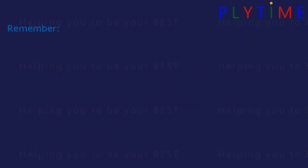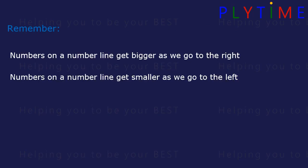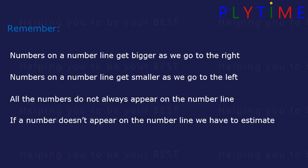Remember, numbers on a number line get bigger as we go to the right and get smaller as we go to the left. All the numbers don't always appear on the number line, and if a number doesn't appear on the number line, we have to estimate where it is.